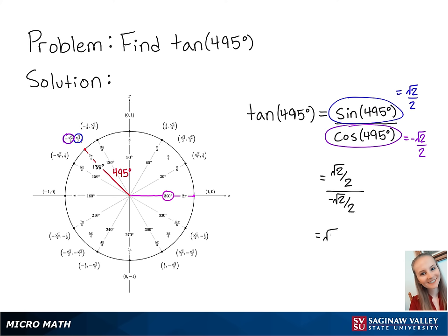If we want to simplify this, we're going to multiply the numerator by the reciprocal of the denominator. Since there's a 2 on the top and the bottom, these will cancel out.